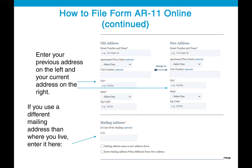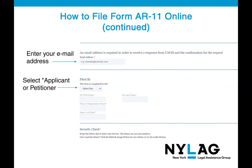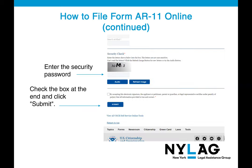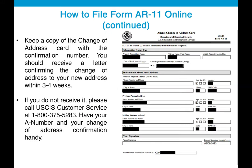Further in the website, you will enter your old address on the left and your current new address on the right. There is also an area to enter your mailing address if different from where you live. Next, enter your email address and select whether you are an applicant or petitioner. Then complete the security check, check the box, and click submit. Afterward, keep a copy of the change of address card with the confirmation number. You should receive a letter confirming the change to your new address within three to four weeks. If not, call USCIS customer service and have your A number and confirmation number handy.